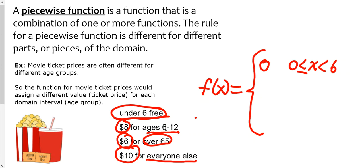The next piece is from ages six to twelve. It's eight dollars. So the value of this function is eight when x is between six and twelve. So six less than or equal to x less than or equal to twelve. Those ages six to twelve include the ages six and twelve, which is why those are both or equals.